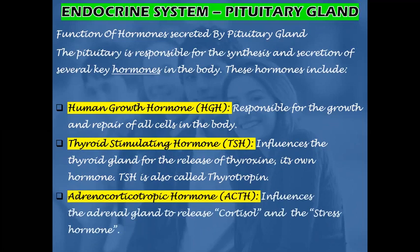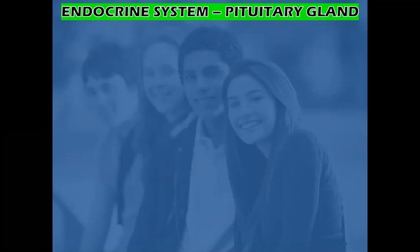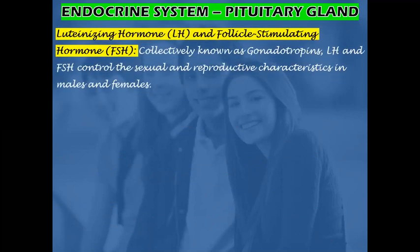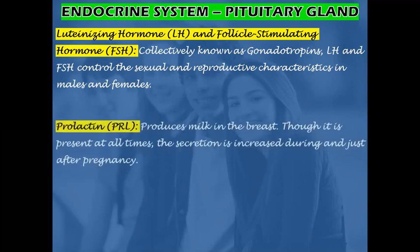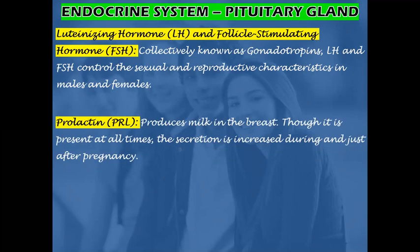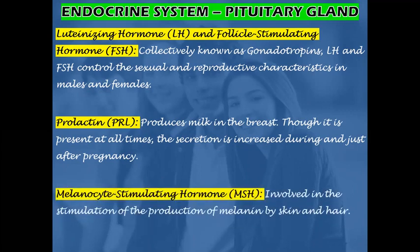Adrenocorticotropic hormone influences the adrenal gland to release cortisol, the stress hormone. Luteinizing hormone and follicle stimulating hormone, collectively known as gonadotropins, control the sexual and reproductive characteristics in males and females. Prolactin produces milk in the breast; though it is present at all times, secretion is increased during and just after pregnancy. Melanocyte stimulating hormone is involved in stimulating the production of melanin by skin and hair.